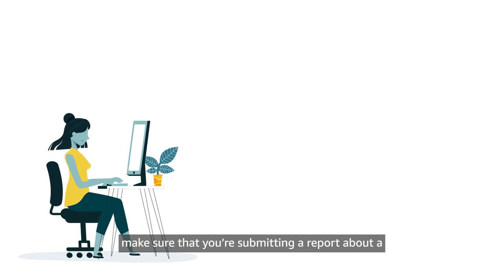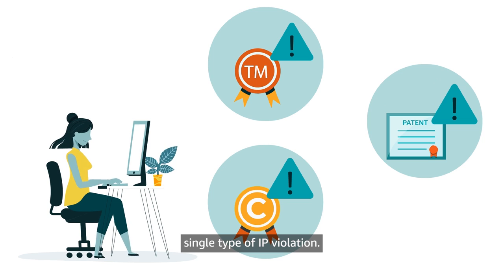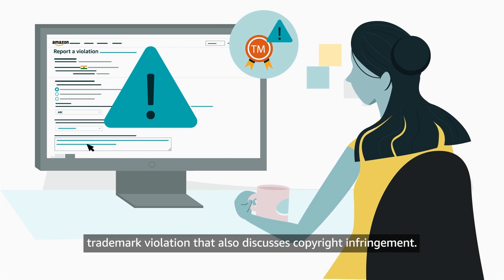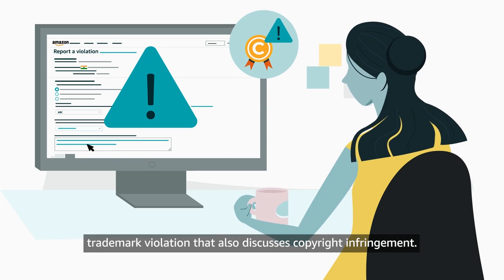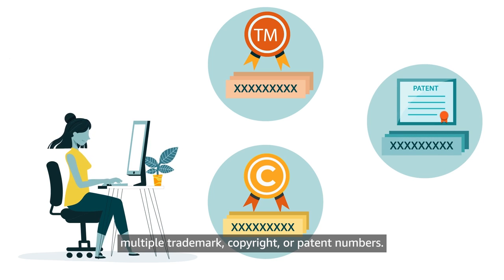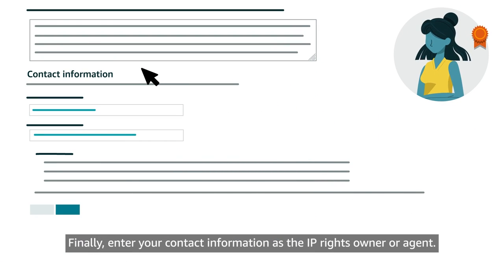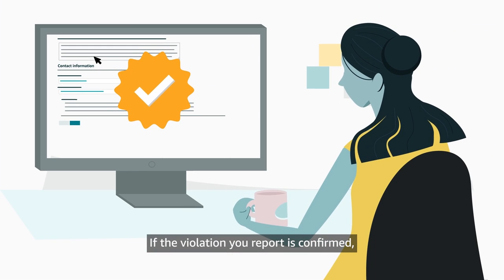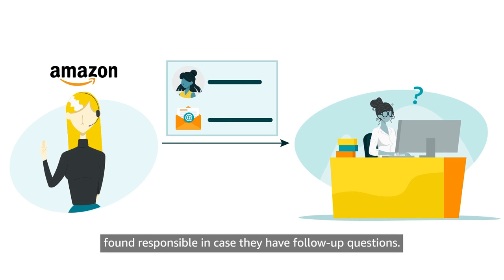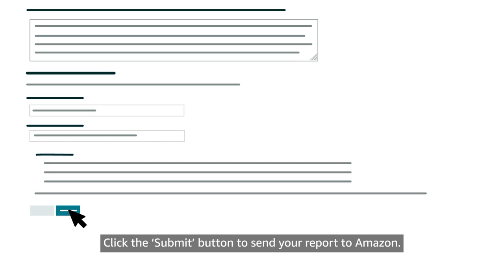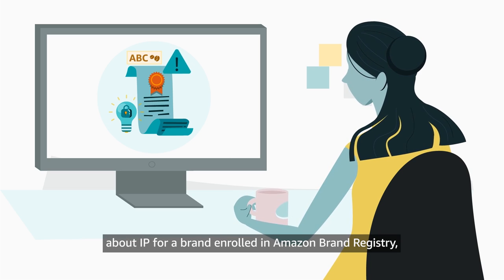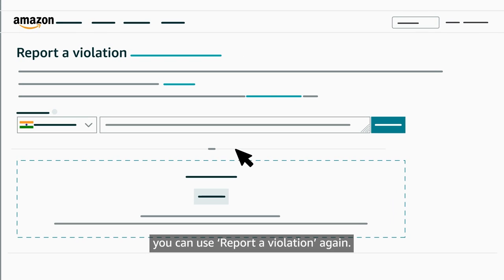Make sure that you're submitting a report about a single type of IP violation. For example, don't submit a report about a suspected trademark violation that also discusses copyright infringement. You also don't want to submit a report that references multiple trademark, copyright, or patent numbers. Finally, enter your contact information as the IP rights owner or agent. If the violation you report is confirmed, we will provide this contact information to the sellers found responsible in case they have follow-up questions. Click the Submit button to send your report to Amazon. If you need to submit additional reports about IP for a brand enrolled in Amazon Brand Registry, you can use Report a Violation again.